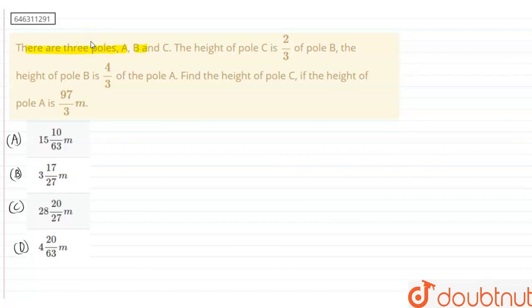There are three poles A, B, and C. The height of pole C is 2/3 of pole B. The height of pole B is 4/3 of pole A. Find the height of pole C if the height of pole A is 97/3.